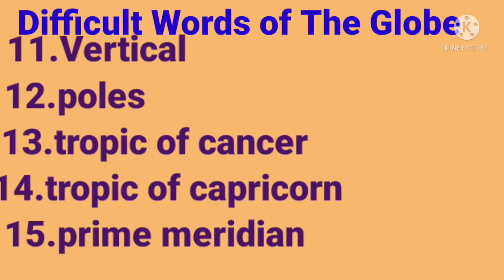Then the next word is vertical, V-E-R-T-I-C-A-L, vertical. Next is poles, P-O-L-E-S — that is north pole and the south pole axis.